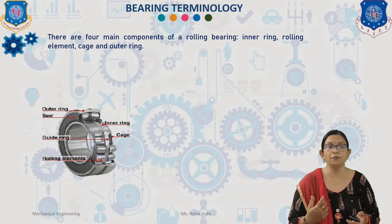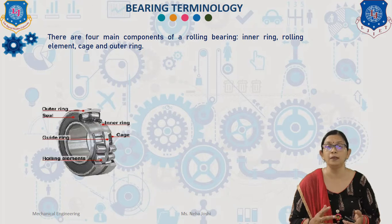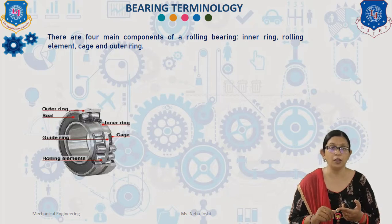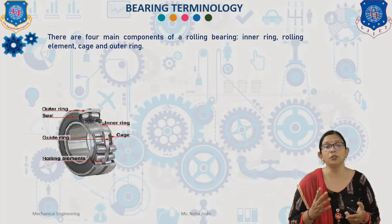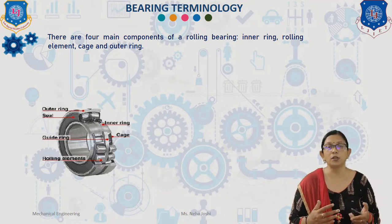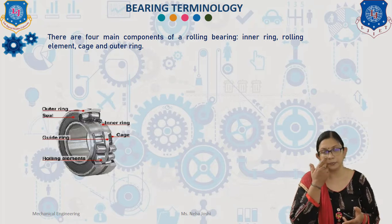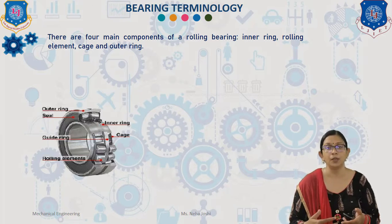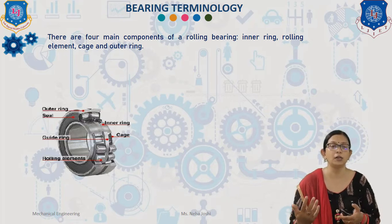Now we will discuss the different terminology of rolling bearings. Generally, there are four main components of rolling bearing. The first one is the inner ring, which is the smaller of the two bearing rings. It has a groove on its outside diameter to form a path for the balls or rollers, worn to a very smooth mirror-like surface finish. The inner ring is mounted on the shaft and is usually the rotating element.